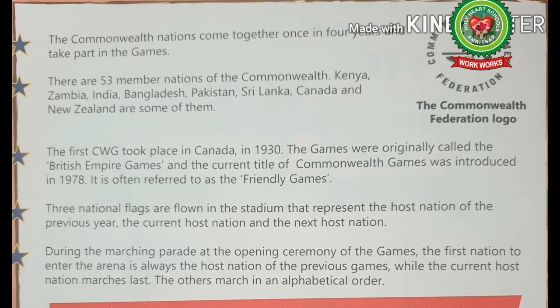Now let us discuss some key points related to Commonwealth Games. Number one: the Commonwealth nations come together once in four years and take part in the games. Number two: there are 53 member nations of the Commonwealth. Kenya, Zambia, India, Bangladesh, Pakistan, Sri Lanka, Canada, and New Zealand are some of them.